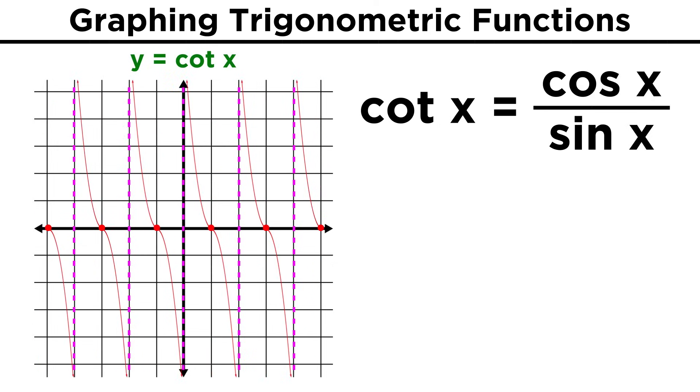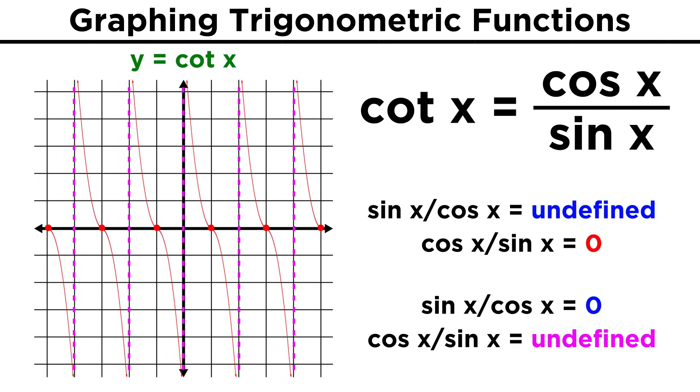Cotangent will be similar, but as it is the reciprocal of tangent, it's a little different, falling to the right instead of rising, and shifted slightly since the x values that originally generated asymptotes will now generate y values of zero, as one over infinity is zero, and the points that originally had y values of zero will now contain asymptotes, as one over zero is undefined.